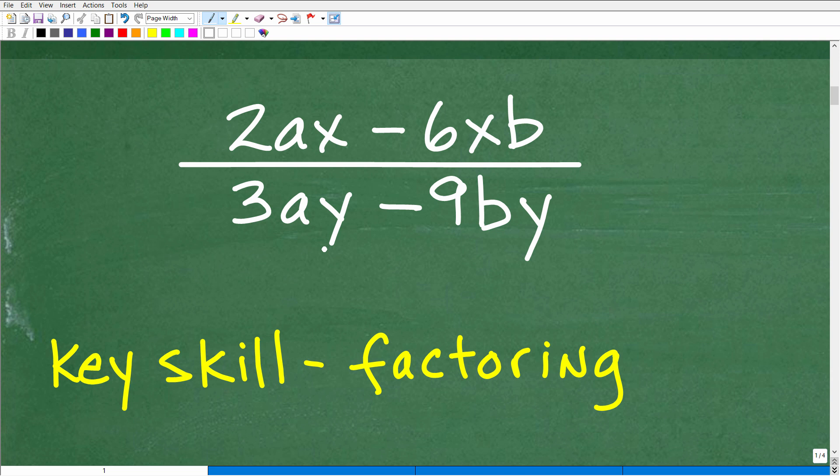So how do we simplify any rational expression or fraction? Let's just use a real easy example. We'll talk about factoring. The key skill is factoring. And it's the same thing as if we were doing this problem right here, 5 over 10. We know we can reduce this fraction to 1 half. So is factoring the key skill here as well? Absolutely.